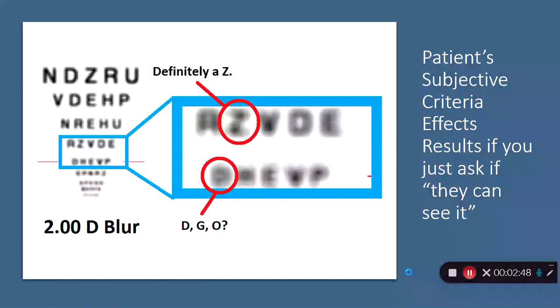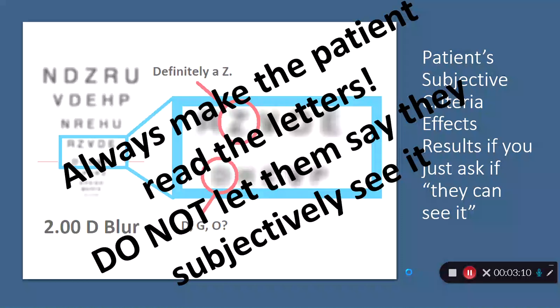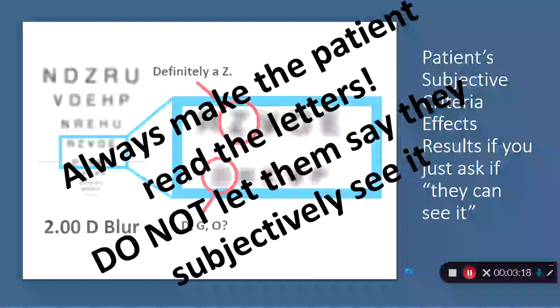And this is because patients come in with different criteria. Some patients might come in and say, these are really easy, or I'm really a gambler. I feel like I can read these off. And so I'll guess without any reserve, and I'll try and guess all these letters. Other people might come in with a different threshold or criteria where they're more reserved and they don't want to be wrong. And so they won't say that they can see it when they actually can. So that's why we can't just ask subjectively whether they see the letters. We have to actually ask them to read it. It violates the principles of the test if you don't have them read the letters and just ask if they see it or not.